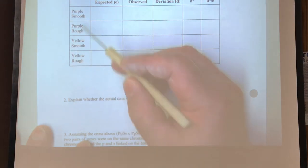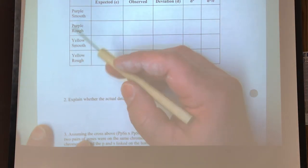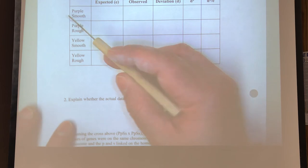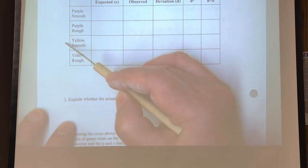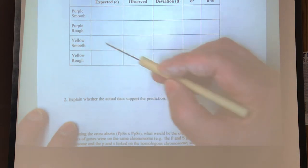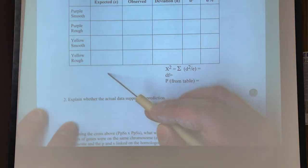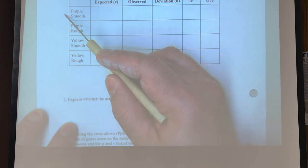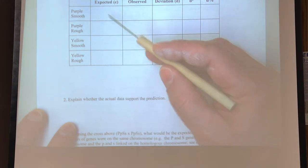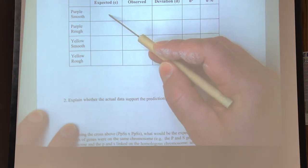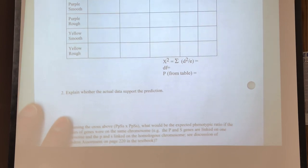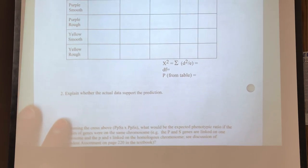And so what our expectants over here are is we're expecting, right, in a dihybrid cross, we're expecting that 9 to 3 to 3 to 1 ratio. So this should be 9 sixteenths, 3 sixteenths, 3 sixteenths, and then 1 sixteenths. So you can only get what your expected is after you determine what your total will be. So you take your total, multiply it by what you're expected, or by the ratio that you expect them to be. So in this case for purple smooth, it would be 9 sixteenths, and that should give your expected, okay? So count up all your observed, that is going to give you your total number to divide by. And so that's how you figure out how to do this experiment.